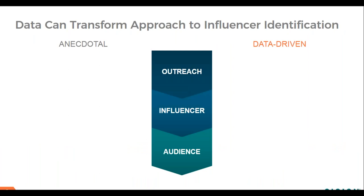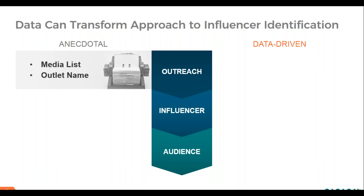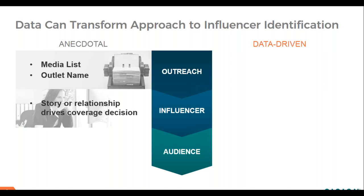Today's communicators must also change the way they think about influencer identification. The anecdotal model is a little outdated. For outreach, if communicators want to get traction with traditional media or news influencers, they do it based on the media list they have on file or tap into existing relationships. For the influencer, their decision to create coverage is predicated on whether the pitch is newsworthy or if they trust that relationship with the communicator.